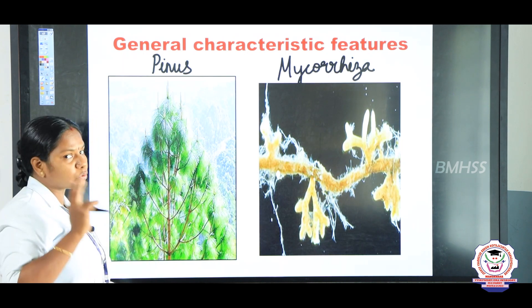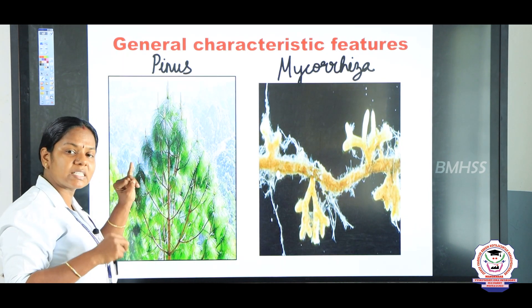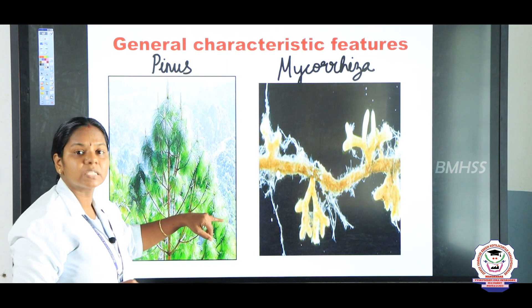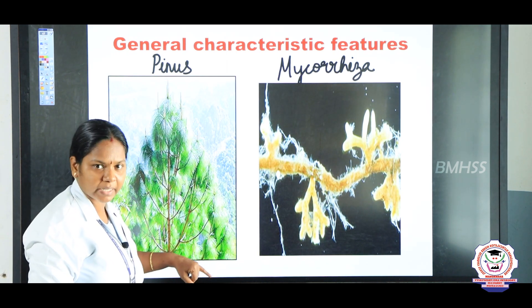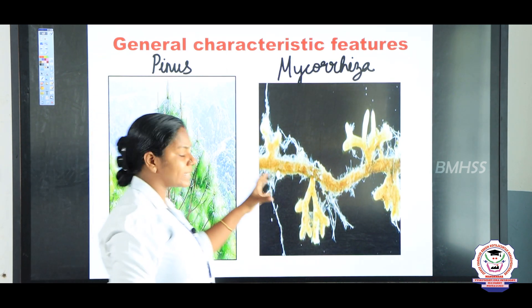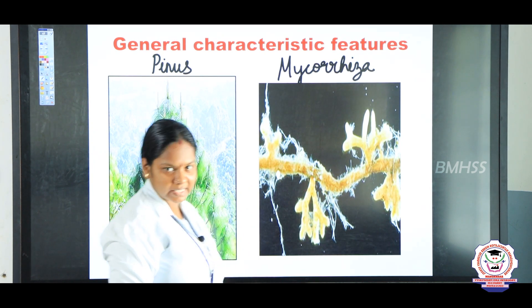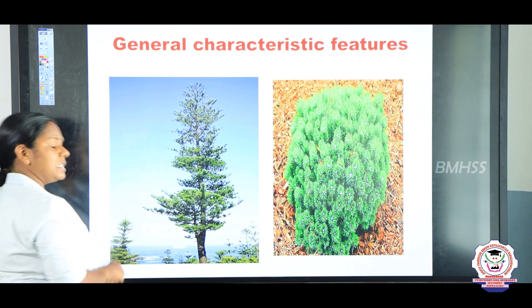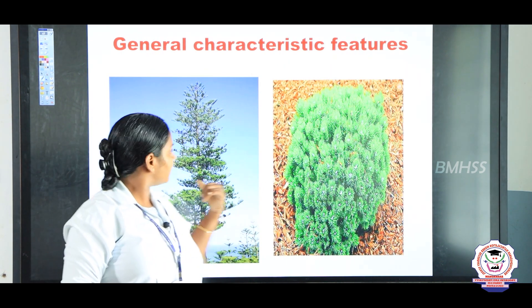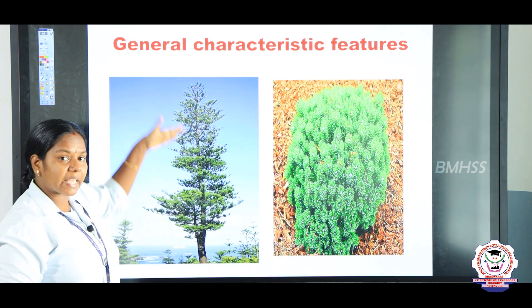We discussed about two types of roots. In Cycas, coralloid roots — cyanobacteria is present. In the roots of Pinus — mycorrhizae is present. Next, we can see about the stem. Stem is aerial, meaning it is found above the ground. Some are branched and some are unbranched.